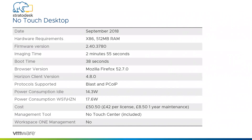Next up is Stratidesk — their solution is called NoTouch Desktop. Imaging time was 2 minutes 55 seconds, boot time was 38 seconds. It's a Linux-based solution with Firefox as the only browser. The Horizon client was the latest version at the time — 4.8 — supporting both Blast and PC over IP. Power consumption was good: 14.3 watts idle and 17.6 watts running Workspace ONE and Horizon. The cost is just over £50, including the licence, first year's maintenance, and the NoTouch Center management tool.